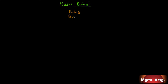We start with a sales budget. The sales budget will lead to a production budget. I'm drawing this a little bit differently than what's in the chapter because that chapter's diagram is a bit misleading. We do the production budget.